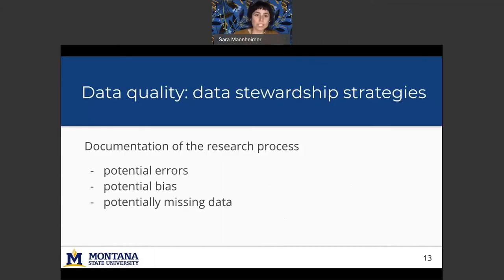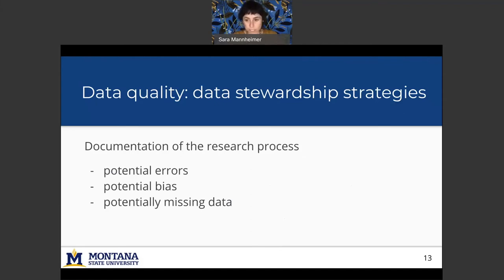So for data quality, data stewardship strategies include supporting documentation of the research process when sharing data. So talking through potential errors, potential bias, and any potentially missing data can go a long way to supporting data quality.